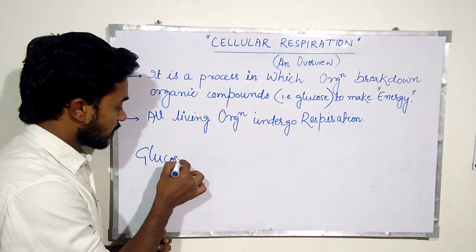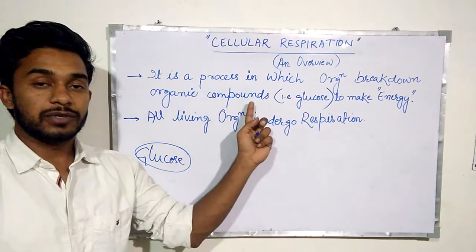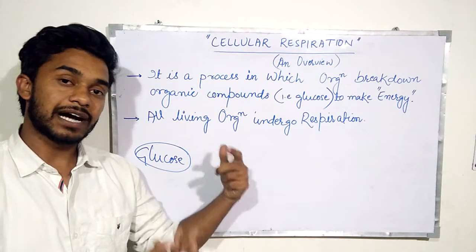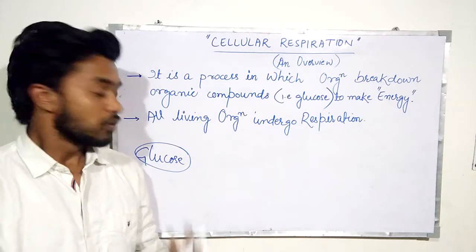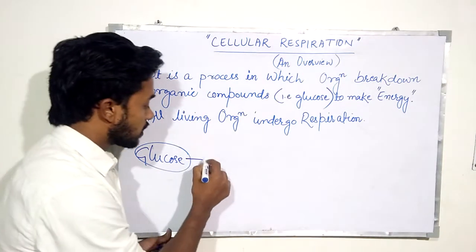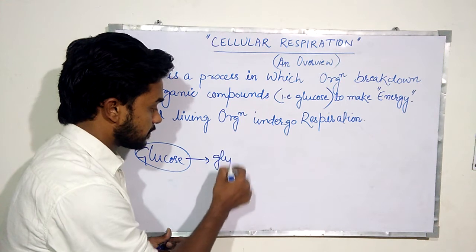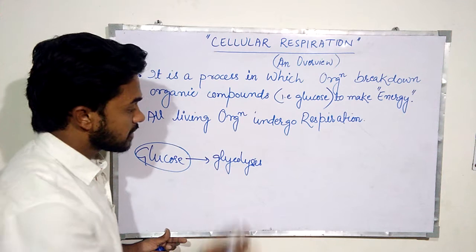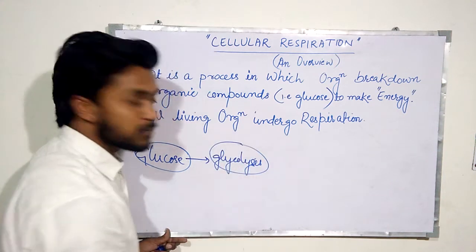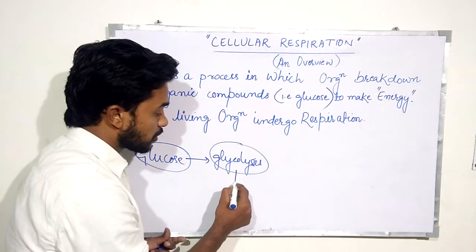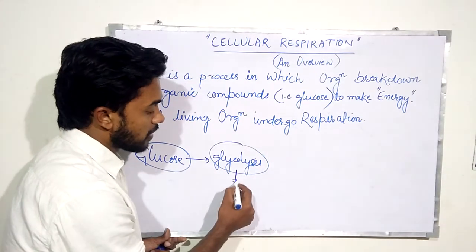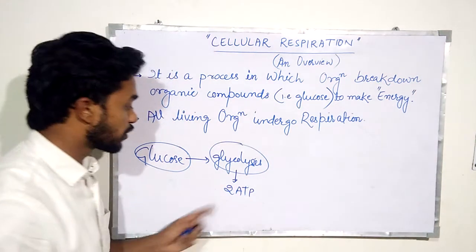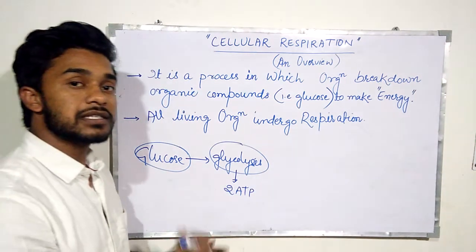Glucose is present in all living beings — when we eat carbohydrates, they contain glucose. Glucose undergoes glycolysis. Glycolysis produces ATP; the total amount of ATP produced by glycolysis is 2 ATP.